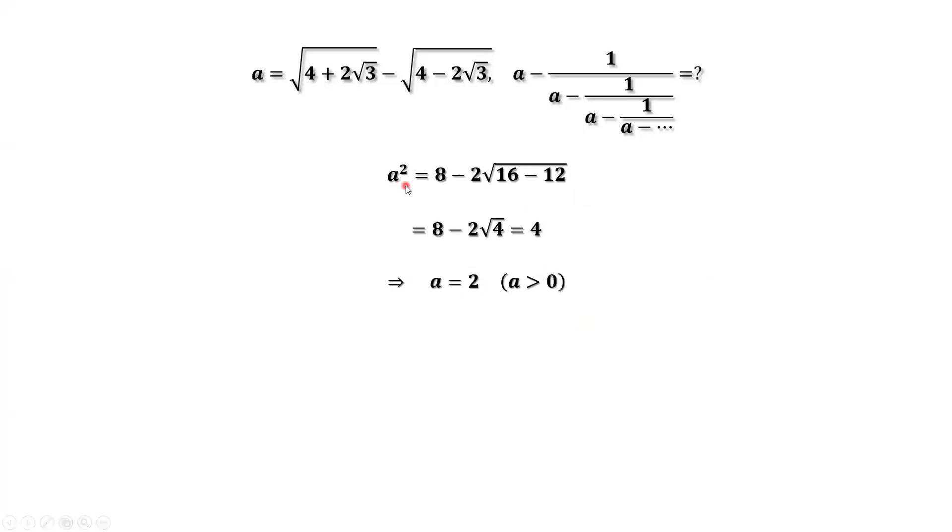Now we have a squared equals 4. Therefore, a equals 2. We drop the negative 2 solution because a is positive. Certainly, you can see here the first term is bigger than the second term. Therefore, a is bigger than zero.